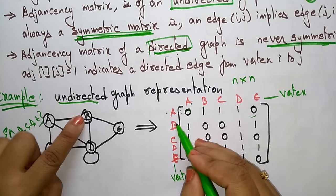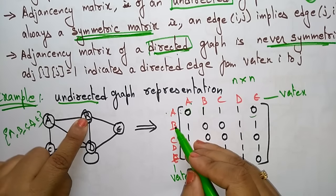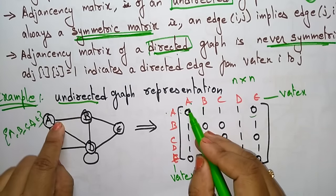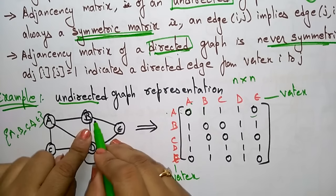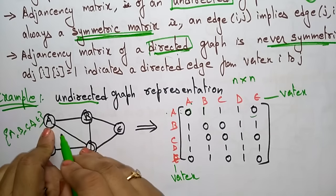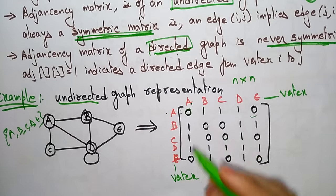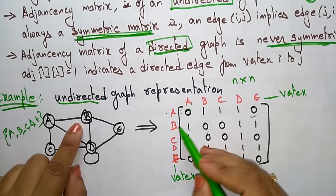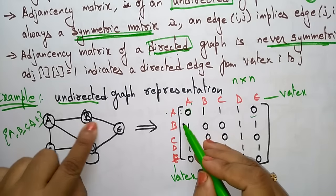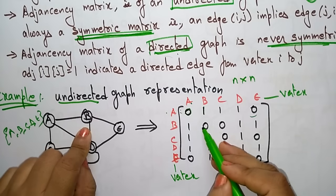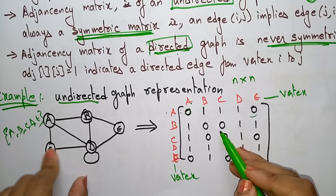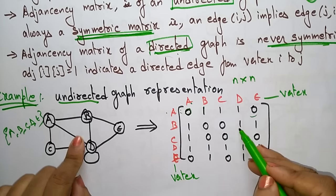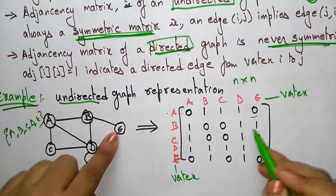Now coming to vertex b. B to a - yes, there is an edge. Since this is undirected, a to b and b to a are both equal, so b to a is 1. B to b - there is no self loop, so 0. B to c - there is no direct edge, so 0. B to d - 1. B to e - 1.